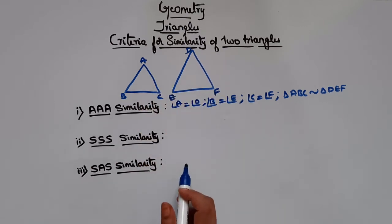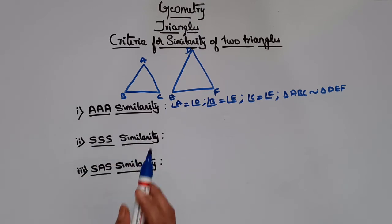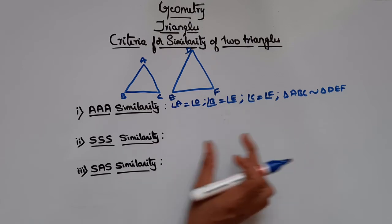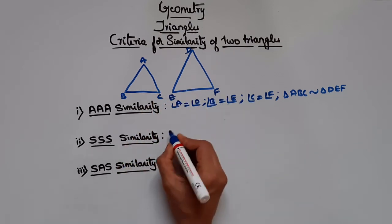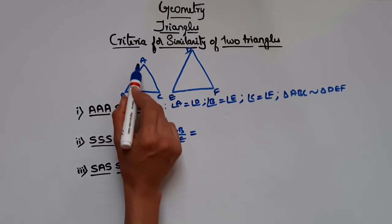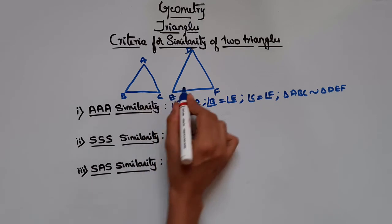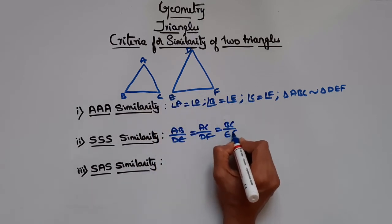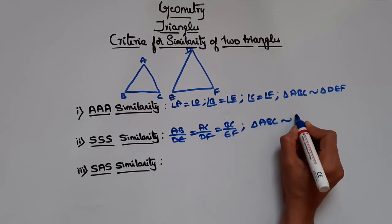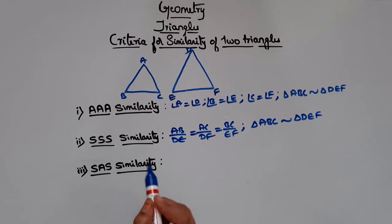Now let's see SSS similarity — side side side similarity. It says if in two triangles the corresponding sides are proportional, that is AB/DE equals AC/DF which equals BC/EF, then you can directly say that triangle ABC is similar to triangle DEF by SSS similarity.